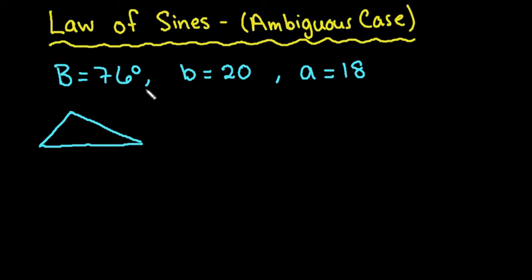Hi, for this video I want to talk to you about Law of Sines, the ambiguous case. Remember that the ambiguous case is when you are given a side, a side, and a non-included angle.